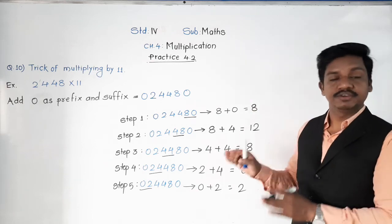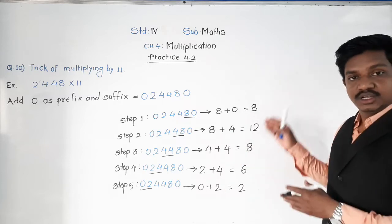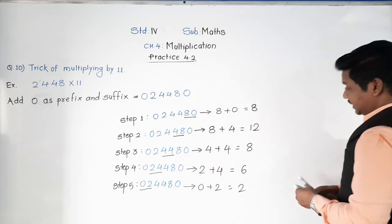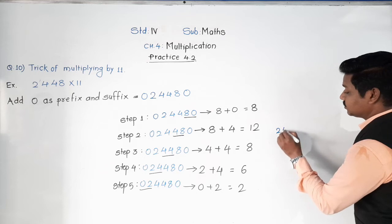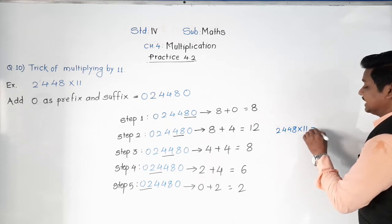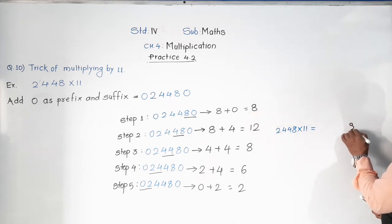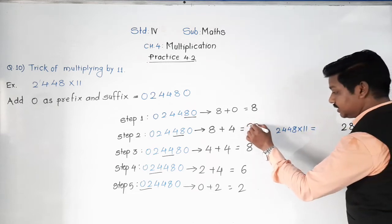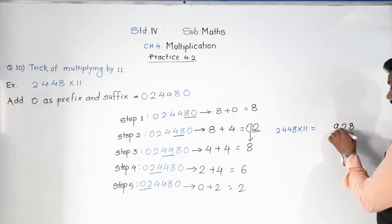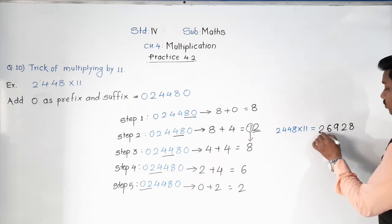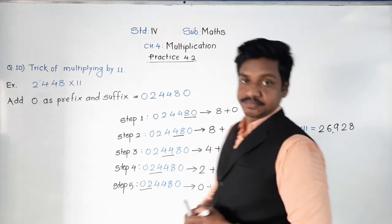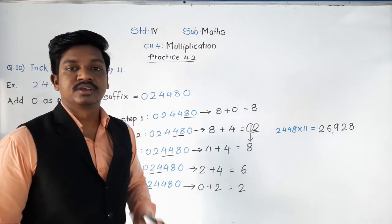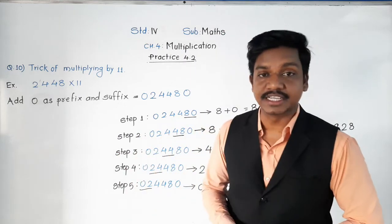We got 12, which is a two-digit number. Whenever we get a two-digit number, we take a carry, just like in regular addition. So the ones digit of our answer is 8. At the tens place we have 12, so we write 2 and carry 1. Adding 1 to the next digit: 8 plus 1 equals 9. Then 6 and 2 follow. So the answer is 26,928.